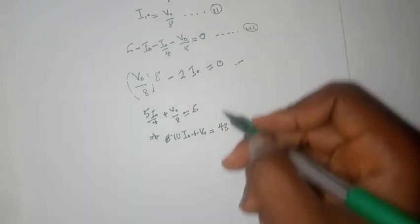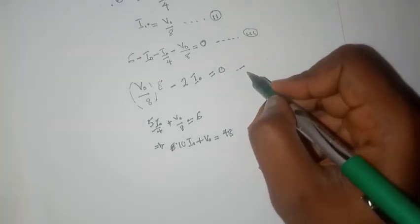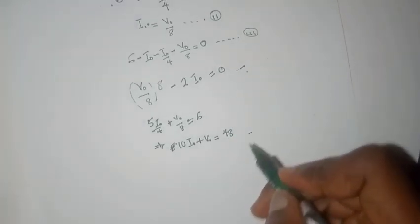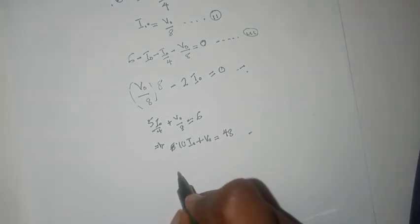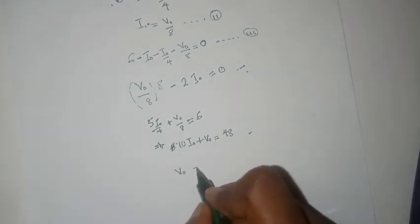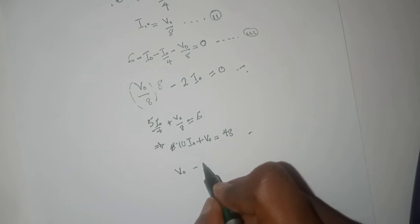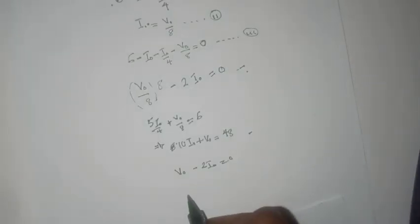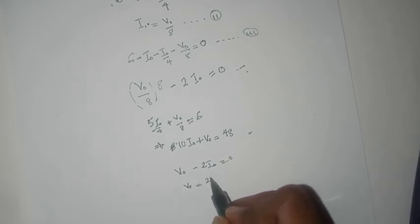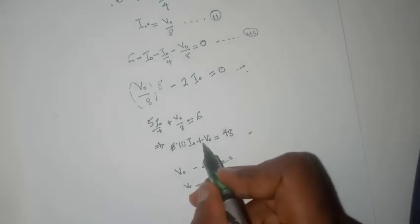Solving these two equations. This equation and this equation. As this equation can also be simplified as V0 minus 2 I0 equals 0. We can simply say that V0 equals 2 I0. We can substitute this here.